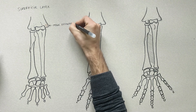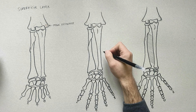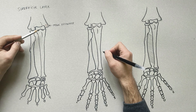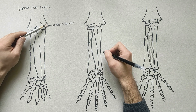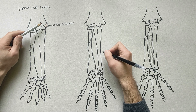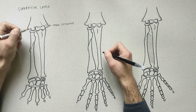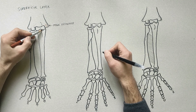The first muscle to be indicated, and the most lateral one, is the pronator teres. This muscle actually has two heads of origin. The superficial head originates from the medial epicondyle of the humerus, and its deep head originates from the medial margin of the coronoid process of the ulna.